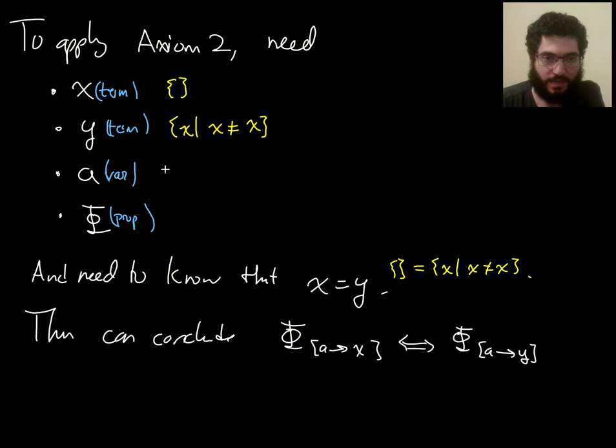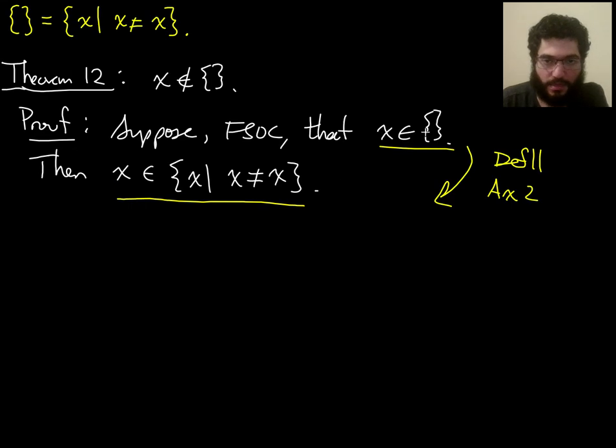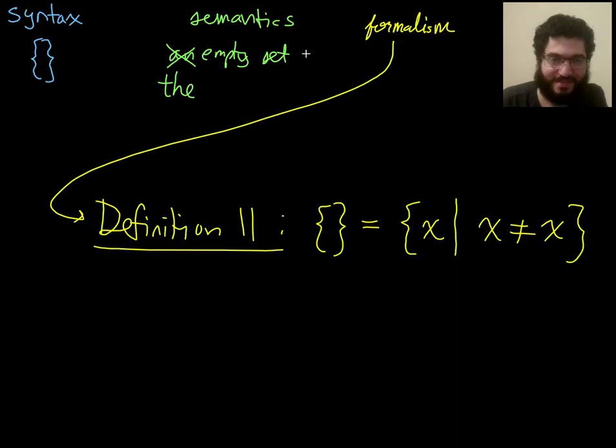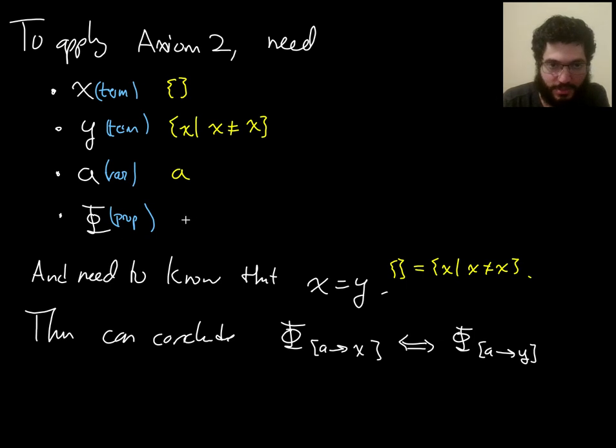And what will I use for my a? Let me just use the variable a. And for the proposition, so in the end, I want to go from x in thing to x in other thing that's equal to the first thing. So for the proposition here, I'll do x in a.